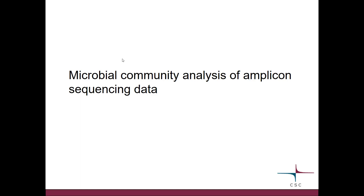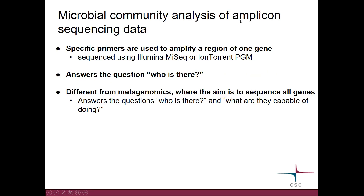This video is a short introduction to microbial community analysis of amplicon sequencing data. When we do amplicon sequencing, we use specific primers to amplify a certain region of one gene. During this course, we have 16S ribosomal RNA gene data. The sequencing is typically done either using Illumina MiSeq or Ion Torrent. This kind of data can answer the question: who is there? It's important to note that this data is different from full metagenomics data, where the aim is to sequence all the genes.